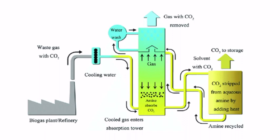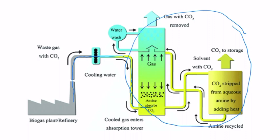Here is a simplified carbon capture process diagram from a biogas or refinery plant, showing a system using the amine process. Waste gas with low CO2 purity comes off the process and flows into a cooling process where waste heat is recovered. The gas stream then flows into the amine process, which consists of two columns: an absorption column and a desorption column. In the absorption column, lean amine contacts the gas stream absorbing CO2, and this amine is then considered rich as it is saturated with CO2.